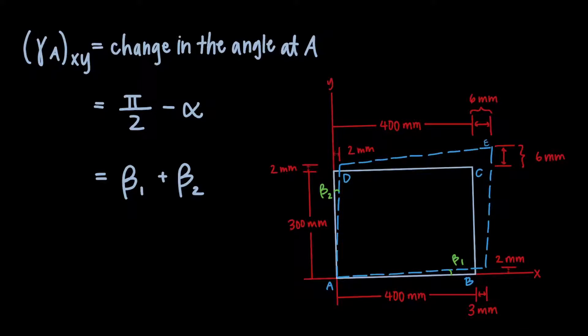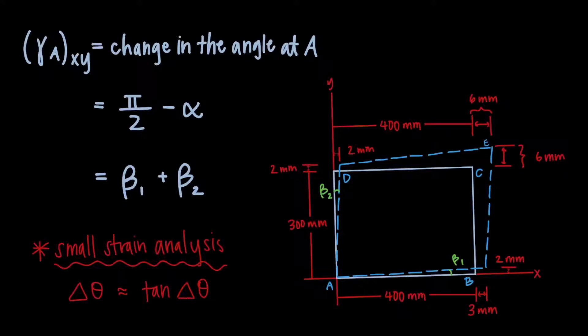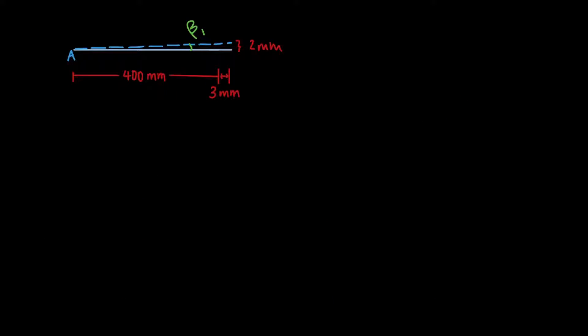Beta 1 and beta 2 are much easier to solve for because they're both essentially just small triangles that we can use trigonometry for. If you watch the key concept video for strain, you know that when we have very small angles like beta 1 and beta 2, we can use small strain analysis. I'll work with beta 1 first. I isolated the angle so we can look at it more closely. We have the lengths of the opposite and adjacent sides to beta 1, so we can use tangent for our small strain analysis. The opposite side is 2 millimeters long and the adjacent side is 403 millimeters long.